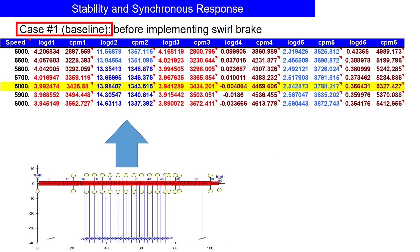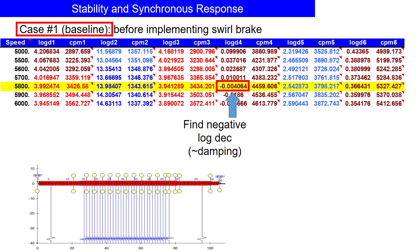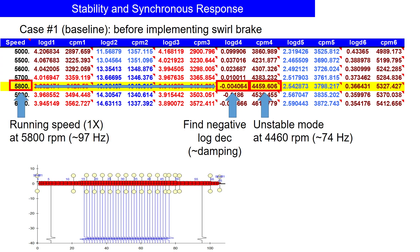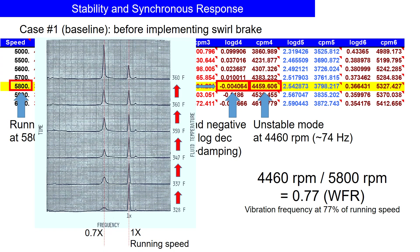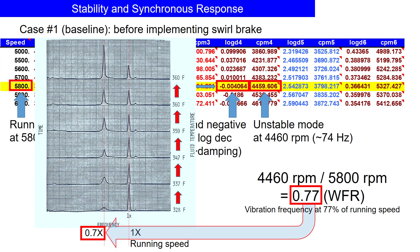From this rotor dynamic model, we can predict the rotor motion for each frequency mode. Our focus is on the stability analysis table. From this table, we can find the negative log decrement at the running speed of 5800 rpm. This table indicates that the unstable mode at 74 Hz will be excited because it has a negative log decrement. This means that the pump will experience vibration frequency at 77% of its running speed — consistent with the test data showing 0.7x sub-synchronous vibration. Rotor dynamic analysis can predict this type of vibration.